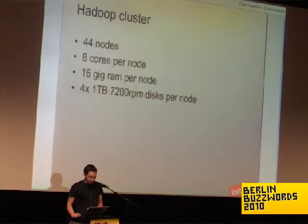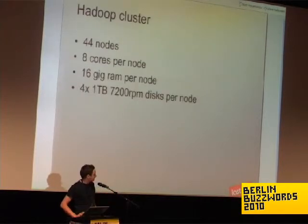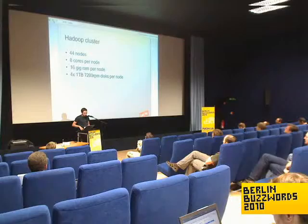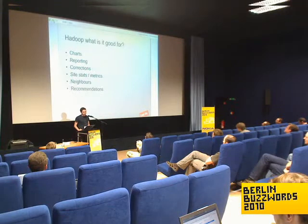Our current Hadoop cluster is quite big — big by our standards: 44 nodes, 8 cores, 16 gig RAM, 1 terabyte disks, and it's mostly full as well.